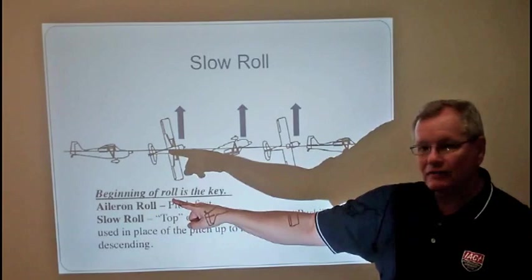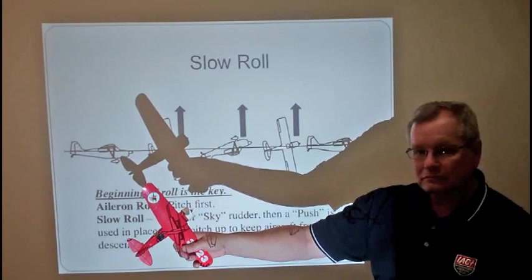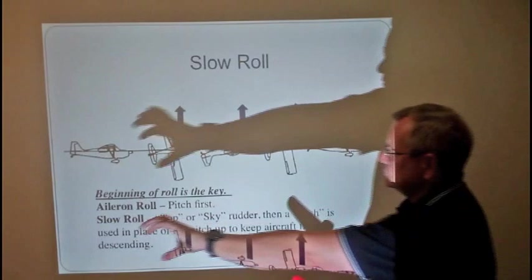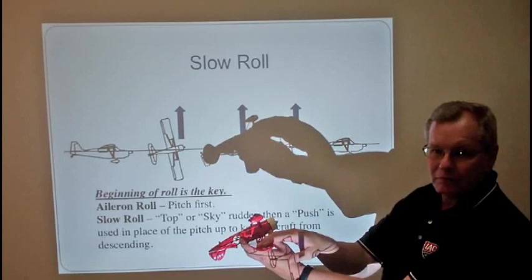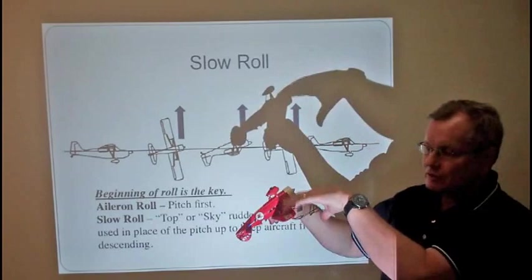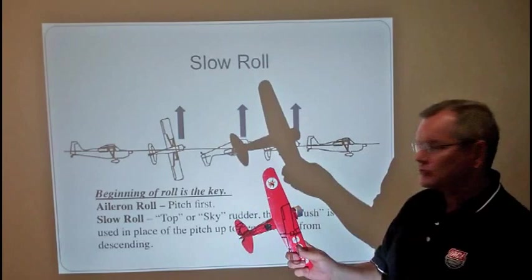You see in the representation here of a decathlon that as you get into knife edge flight, you need to step on top rudder so that as the airplane is going horizontally, your center gravity dot tracks this horizontal line. Then as you get into inverted flight, look how high you have to have the nose up so that the lift created with the bottom of the wing now has the angle of attack necessary to maintain level flight.